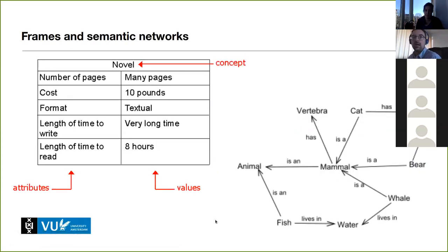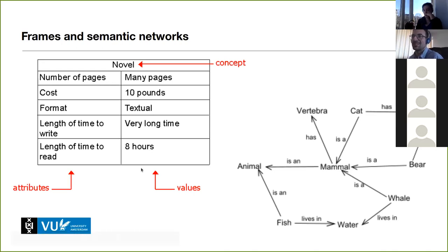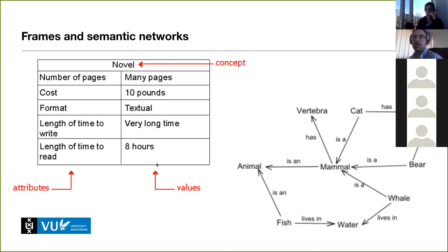Student question: 'You said SAT is NP-complete — isn't 2-SAT polynomial?' Yes, that's very true. 2-SAT is polynomial-time solvable, and only above that does things get NP-complete. So it's a problem that quickly becomes NP-complete, but the simple version is polynomial.